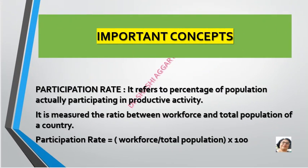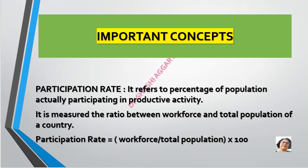These are the important concepts related to the measurement of employment and unemployment. Participation rate means what is the percentage of the population participating in productive activity. It is the ratio between the workforce and the total population of a country. Participation rate equals workforce divided by total population, multiplied by 100.